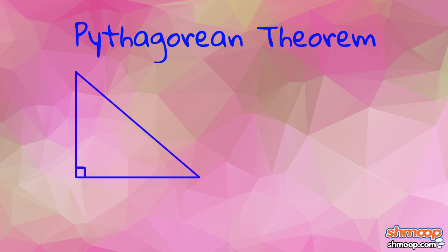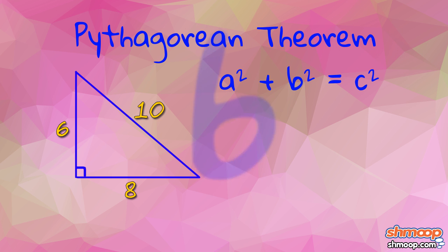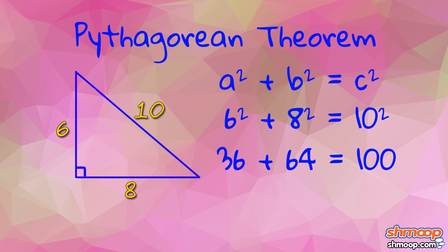Well, checking to make sure that all works out, we've got a triangle with sides that are 6, 8, and 10 feet long. And 6 squared plus 8 squared comes out to 100, which is the same as 10 squared.